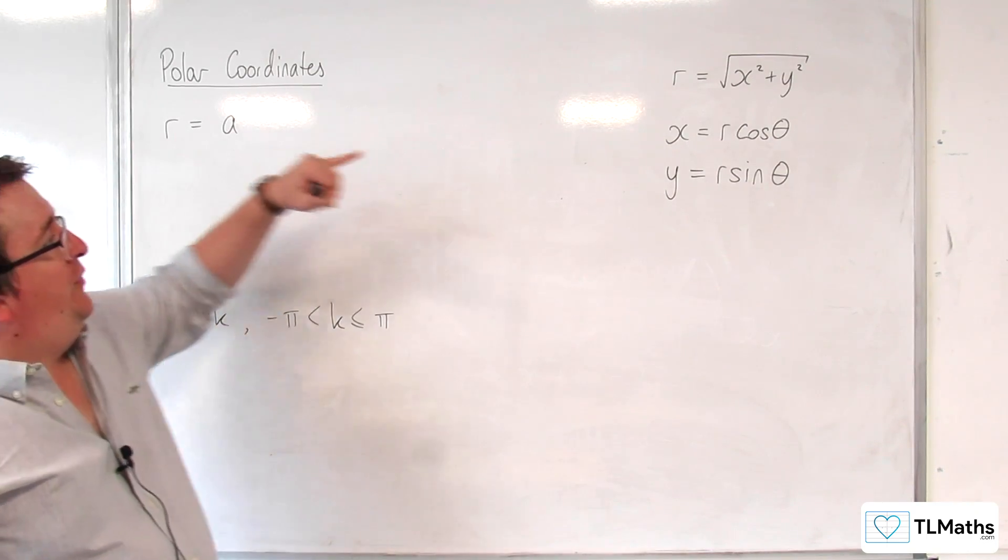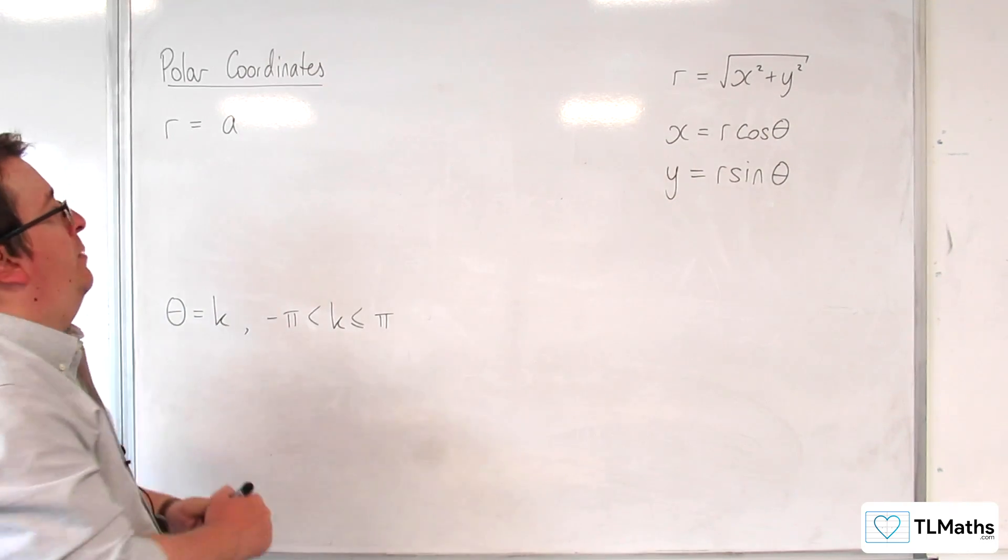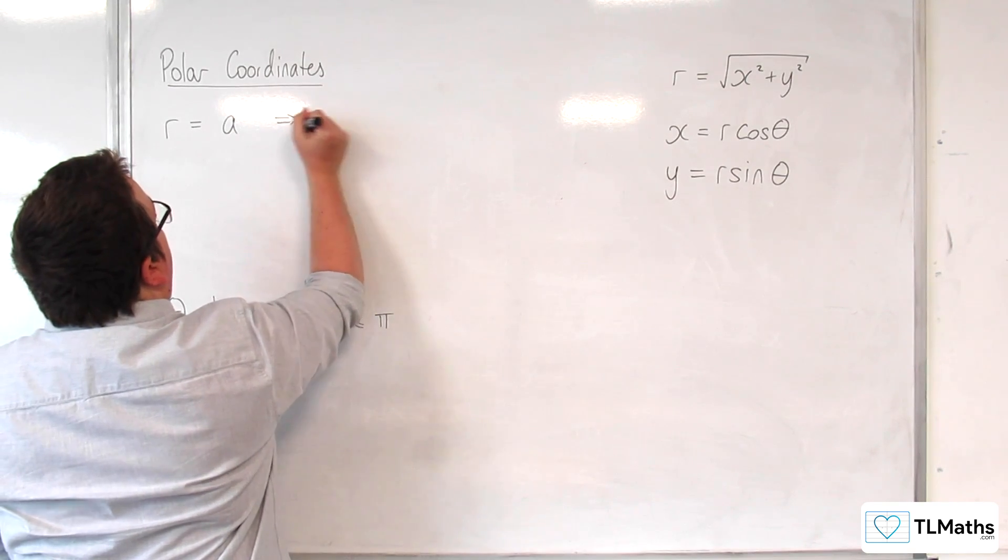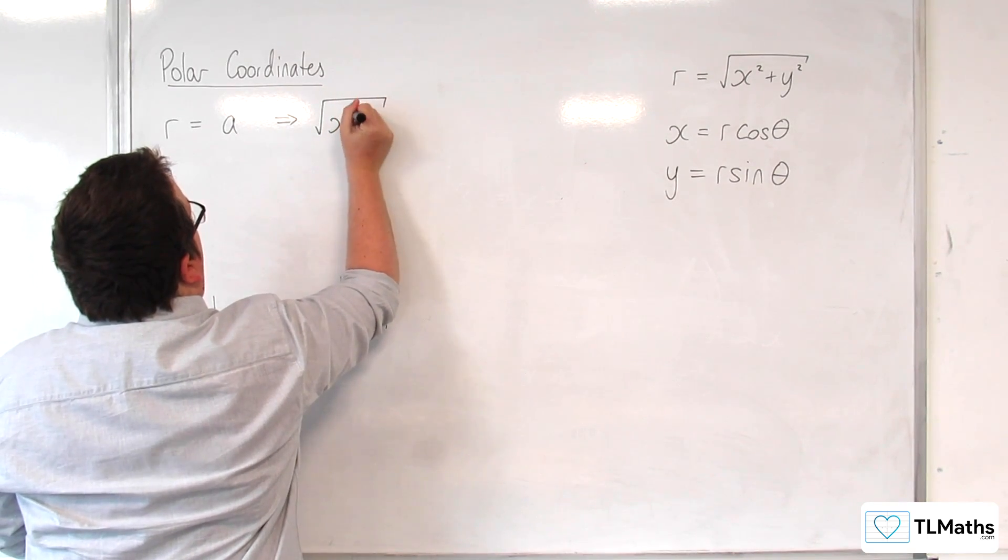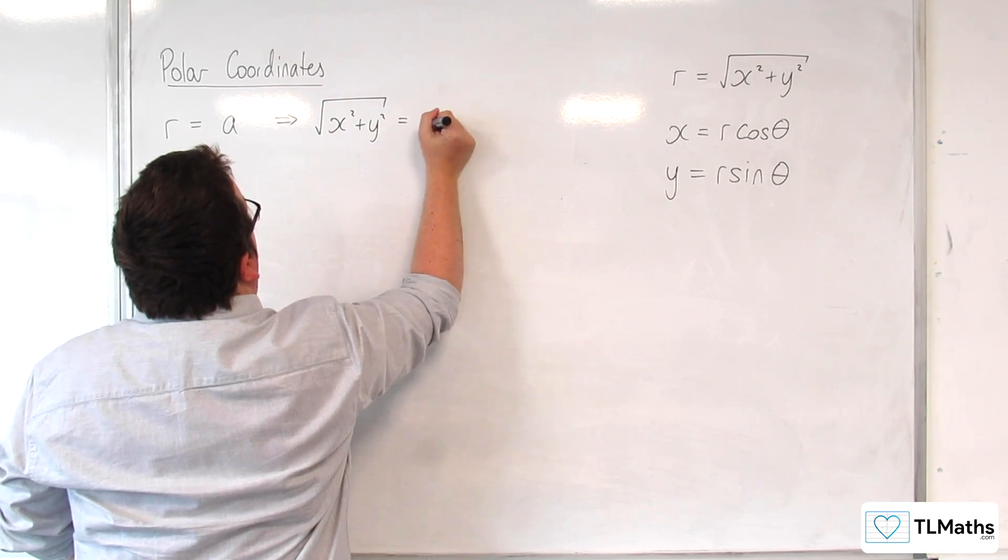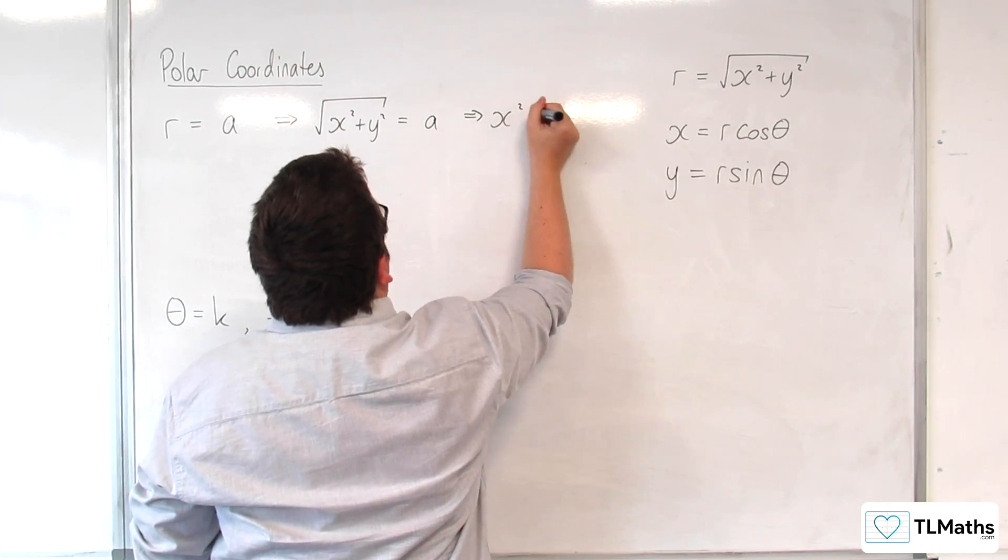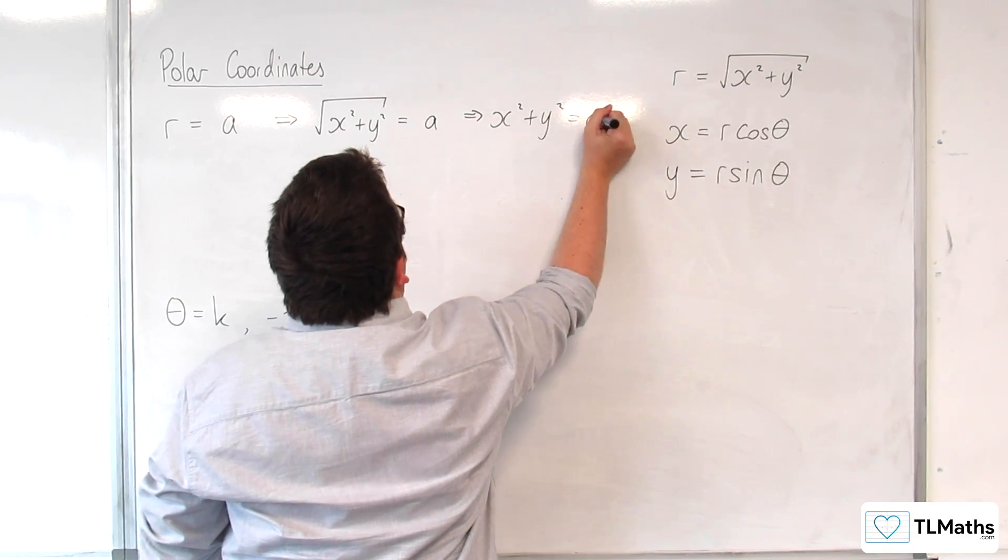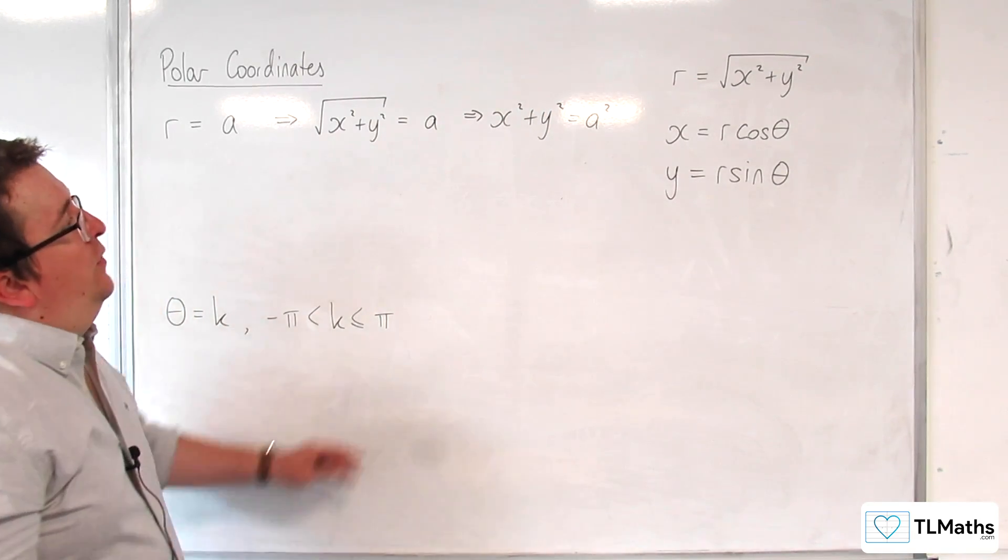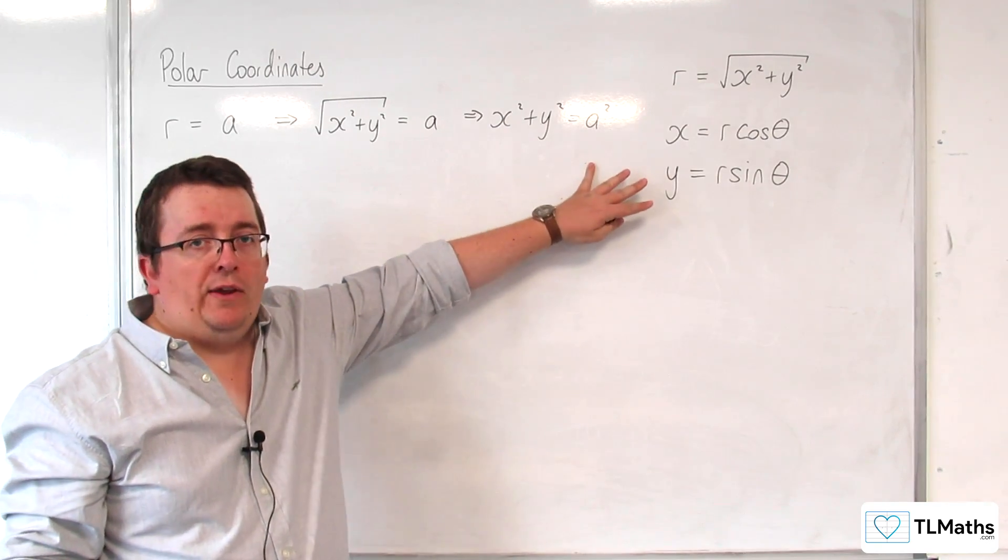If I replace the r with the square root of x squared plus y squared and then square both sides, we can clearly see that we're getting a circle centered at the origin with radius a.